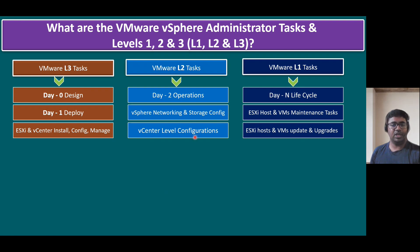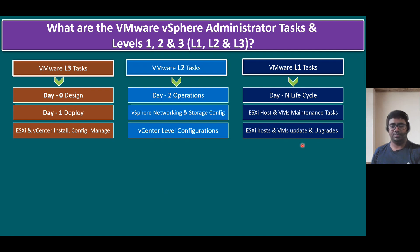At the vCenter level, any configurations like vSwitch configuration, dvSwitch configuration, or migrating virtual machines from virtual switch to distributed switch — these are taken care of by the level two team. ESXi host and VM updates and upgrades are handled by the L1 team. Because it is a repeated task, either L3 or L2 prepares the document and shares it with L1. They follow the procedure based on the SOP.